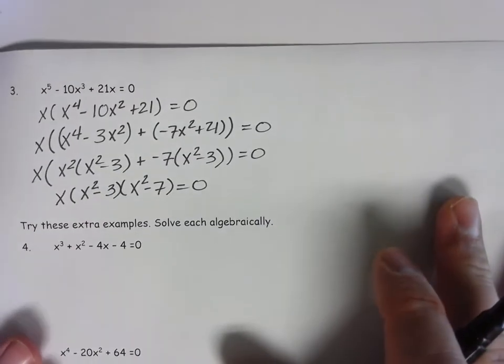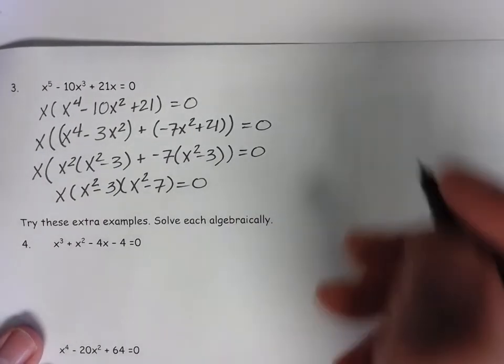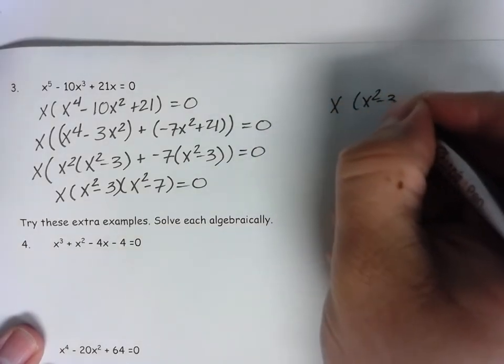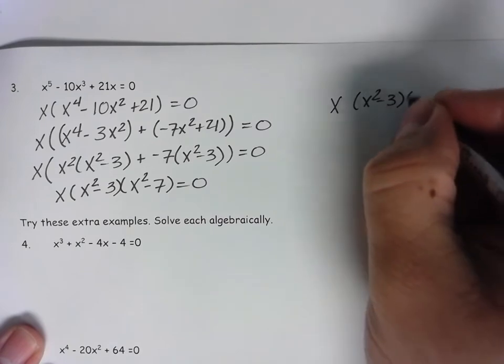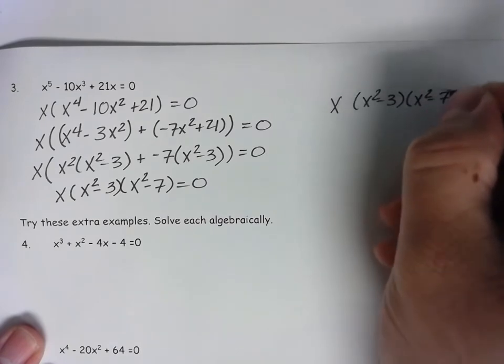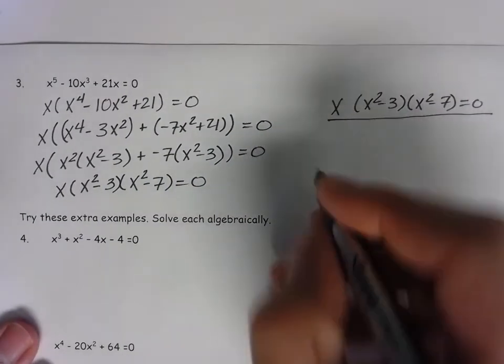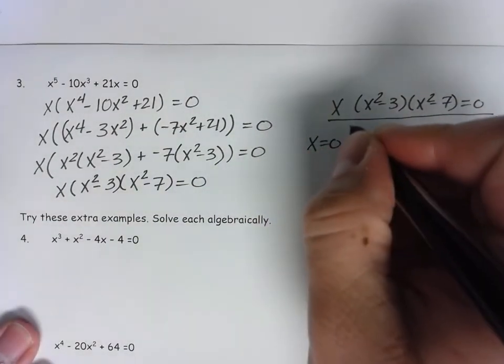Now, we need to solve these for the x's. So, x, x squared minus 3, x squared minus 7 all equal to 0. T-chart this up. x equals 0. That's the easy one.